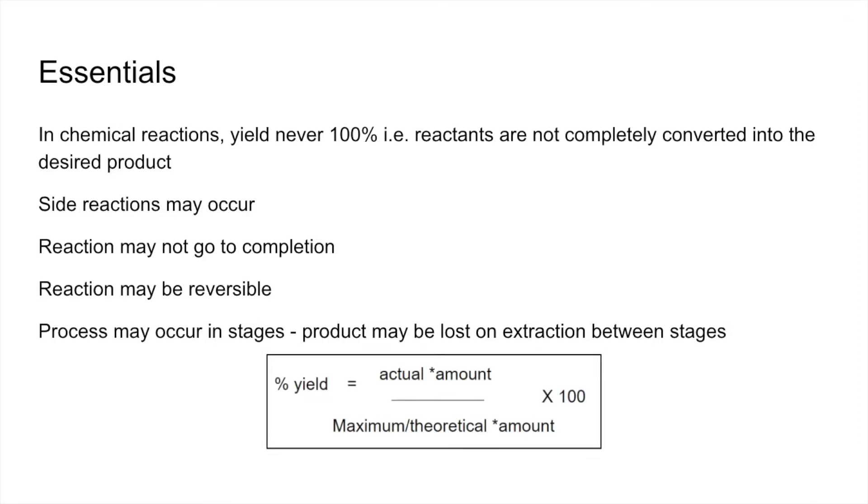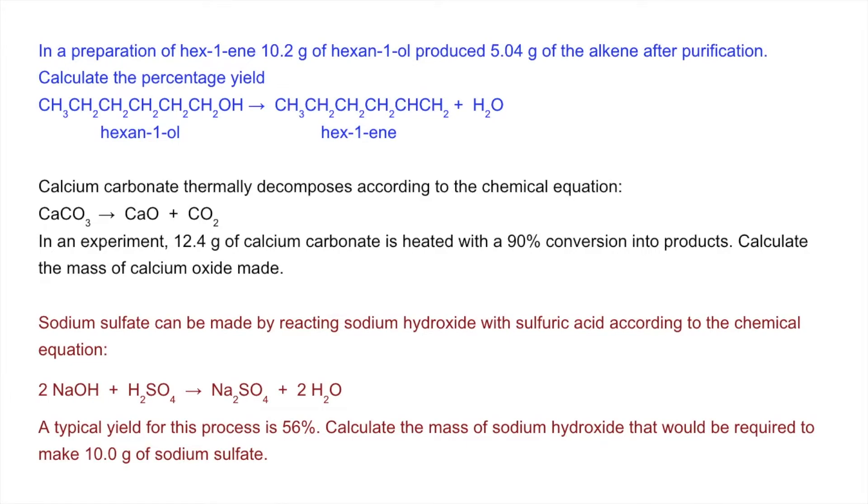The formula to calculate percentage yield: percentage yield equals the actual amount divided by the maximum or theoretical amount times 100. The amount can be in moles or mass.